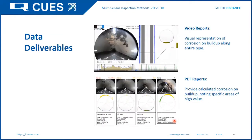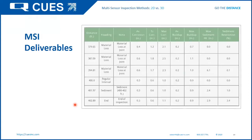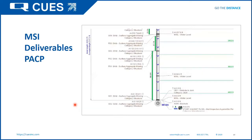For data deliverables, we provide an all-in-one report showing video, lidar on top, sonar below, and graphs displaying corrosion and debris throughout the run. PDF reports are generated typically every 50 to 100 feet depending on the client's preference, and at every location where a problem is identified. A summary of all observations is also provided, and PACP observations can be made on any flagged location, either during collection or later via office computers.